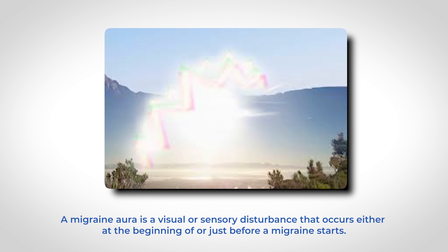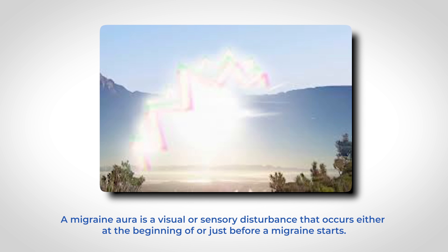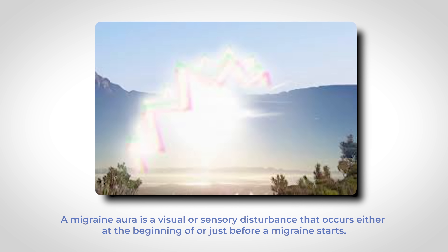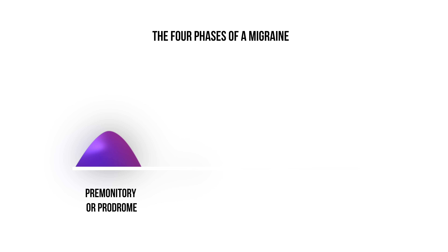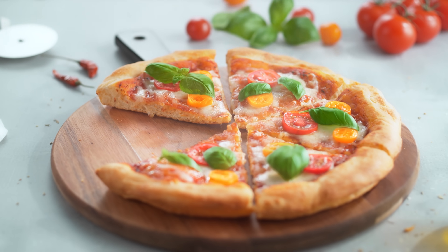A migraine aura is either a visual or sensory disturbance that occurs at the very beginning or just when a migraine is about to start. Migraines come in four phases. The first is the premonitory or prodrome phase, where people often experience mental state changes — mood swings, difficulty concentrating, and even intense food cravings, like craving high-caloric foods such as pizza.